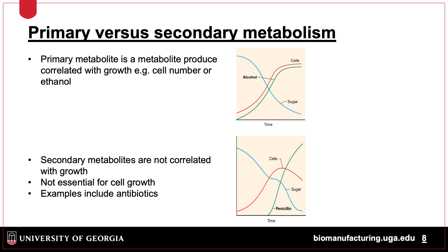In contrast, secondary metabolites are not linked to an increase in the number of organisms and usually appear later in the growth process. In this example, the peak in the growth of cells precedes the use of the sugar substrate to produce the antibiotic penicillin.